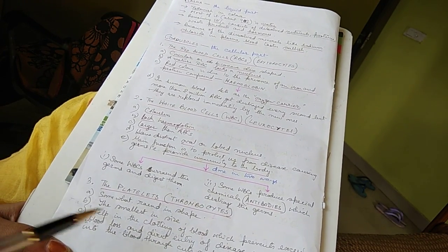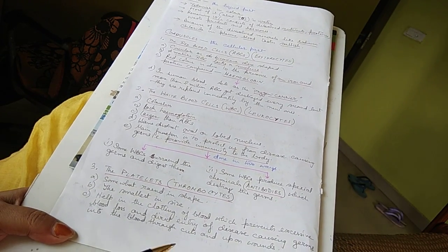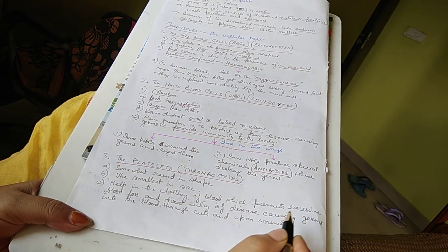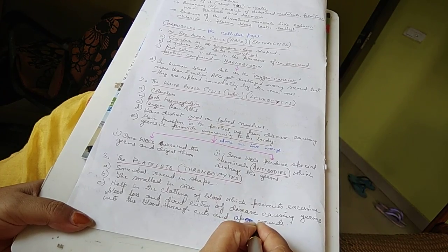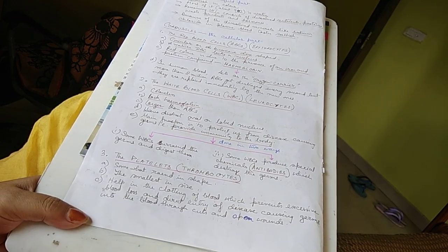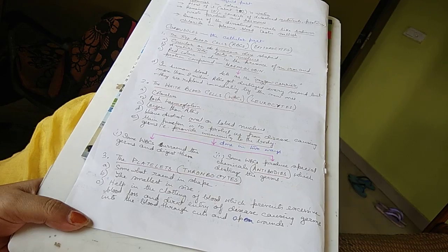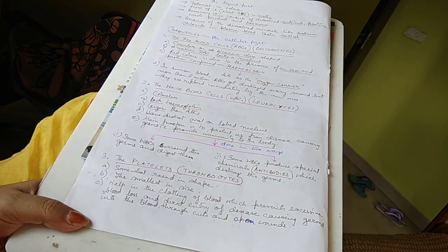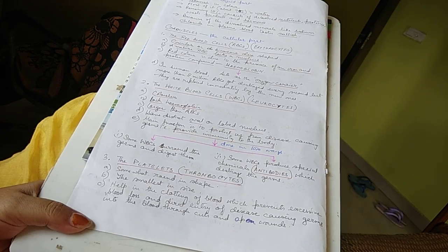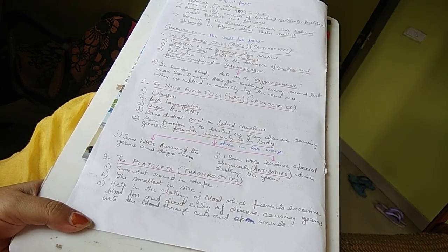Now the platelets or thrombocytes - somewhat round in shape, the smallest in size, help in the clotting of blood which prevents excessive loss and direct entry of disease causing germs into the blood through cuts and open wounds. Thrombocytes or platelets are round in shape, smallest cells, very small, and it helps the blood clot.